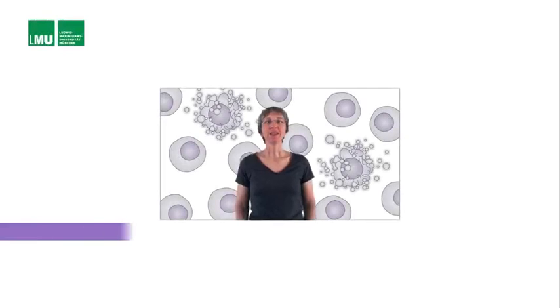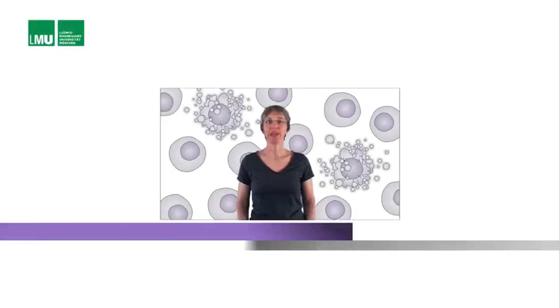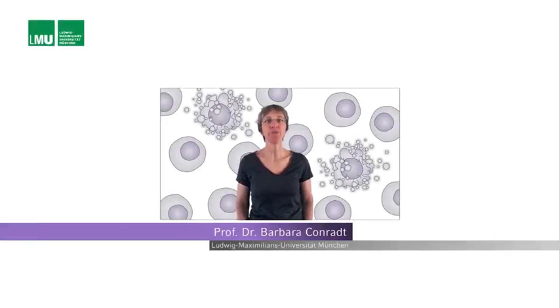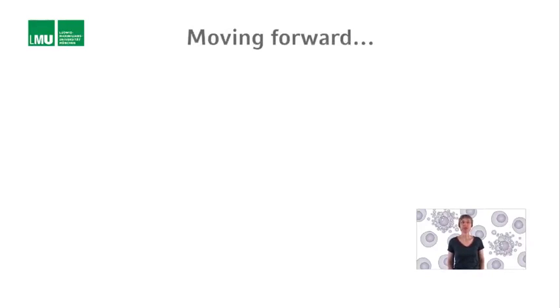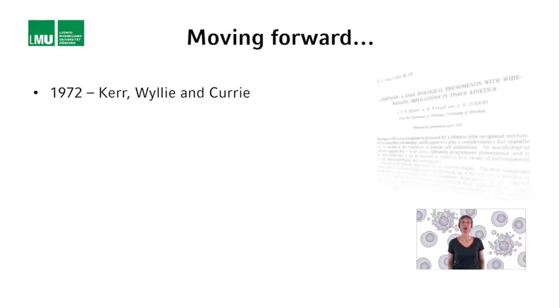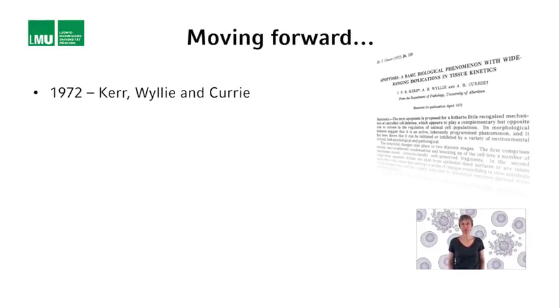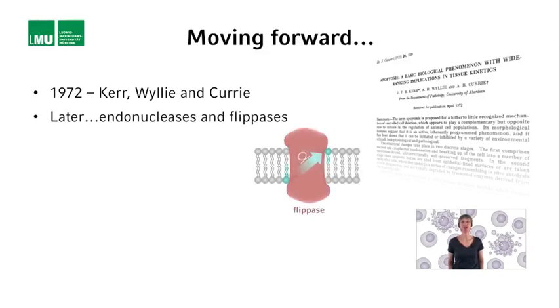In their 1972 publication, Kerr, Wiley and Curry described the process of apoptosis at the morphological level and discovered that this phenomenon was conserved. This represented a major step forward. Soon after, it was discovered that endonucleases and flippases are involved in apoptotic cell death.